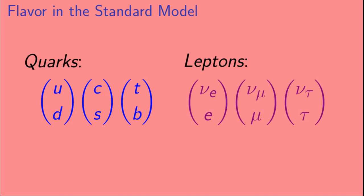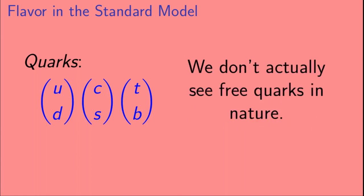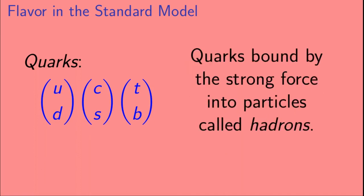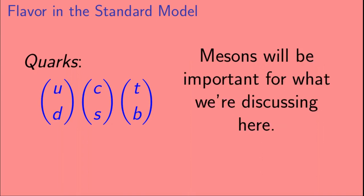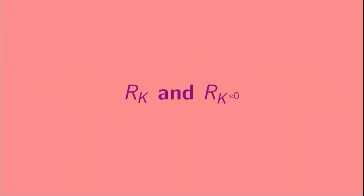There are six quarks and six leptons, but there's something we need to mention about the quarks. We don't actually see free quarks in nature. Instead, quarks are bound by the strong force into particles called hadrons. The hadrons primarily come in two types: mesons and baryons. Mesons will be important for what we're discussing here. So let's talk about Rk and Rk-star.